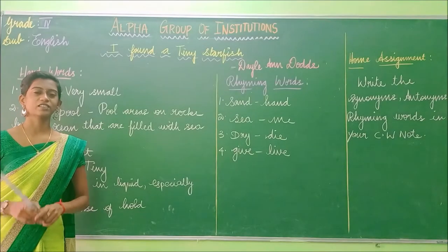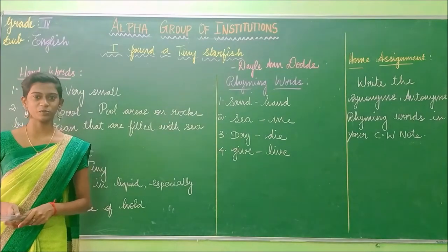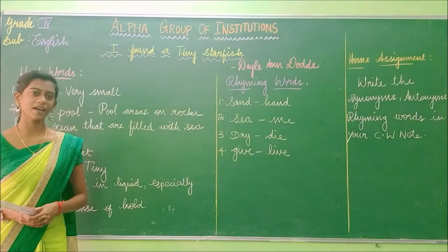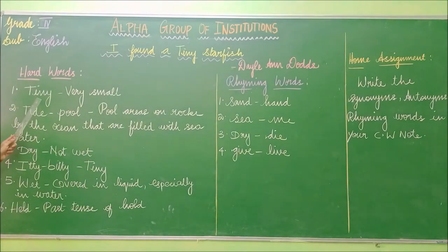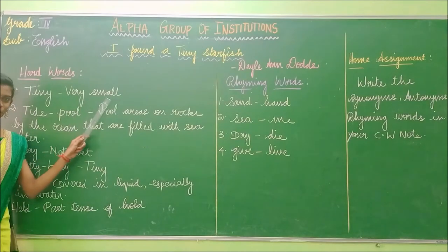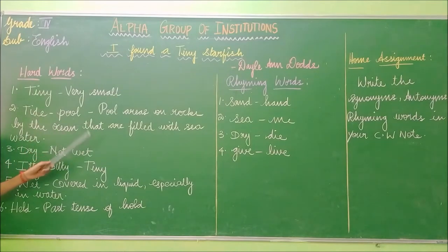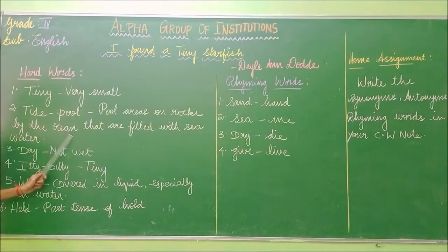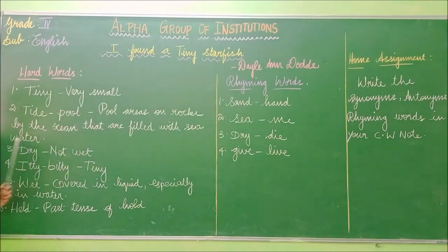Okay students, so before studying the poem, first we are going to read the hard words so it will be very easy for you to understand the reading. Are you ready? Tiny — very small. Tide pool — pool areas on rocks by the ocean that are filled with sea water.